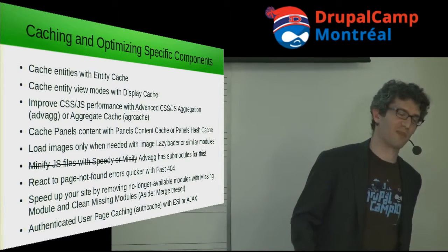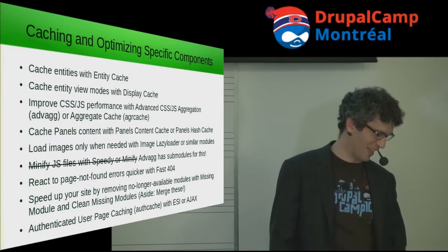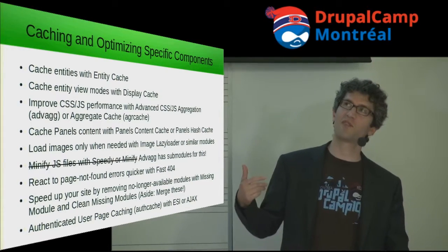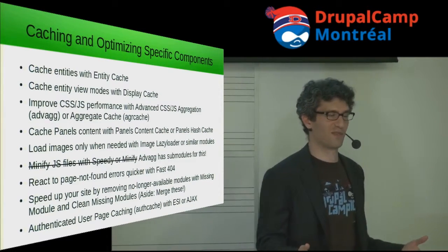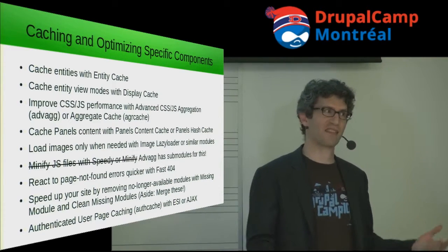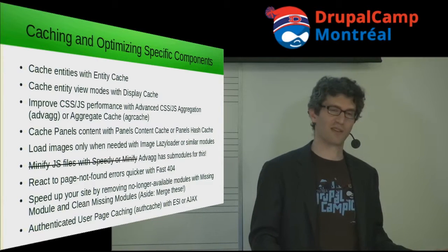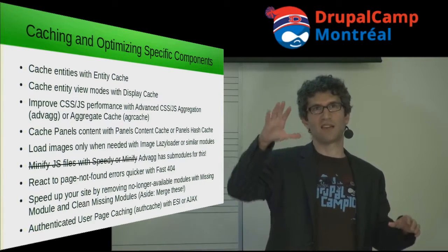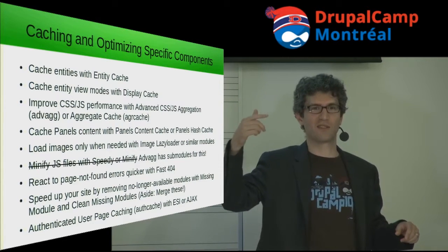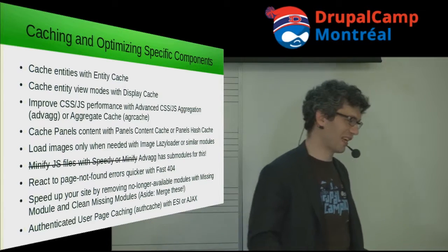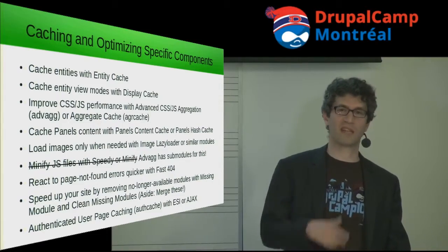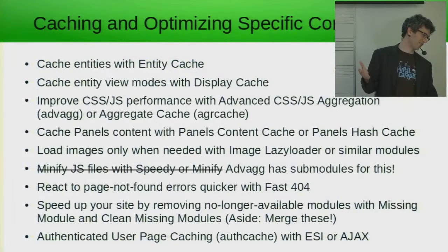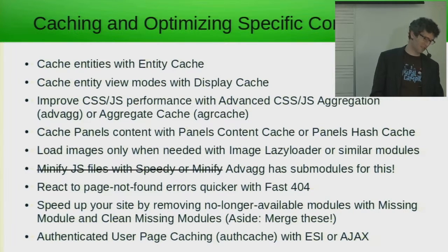If you're using Panels, they have some caching modules that'll help with that. For images: if you've got a gallery site with a lot of images on a page, you don't want to load everything right away or the user will be waiting several minutes. You can use Image Lazy Loader, a contrib module that loads images dynamically via Ajax as the user scrolls down — it won't load everything at once, which is a really good idea for those types of sites. There's also Fast 404, which really improves Drupal core's handling of pages not found — the core way is really inefficient. If you're getting a lot of 404s, this is something to think about.